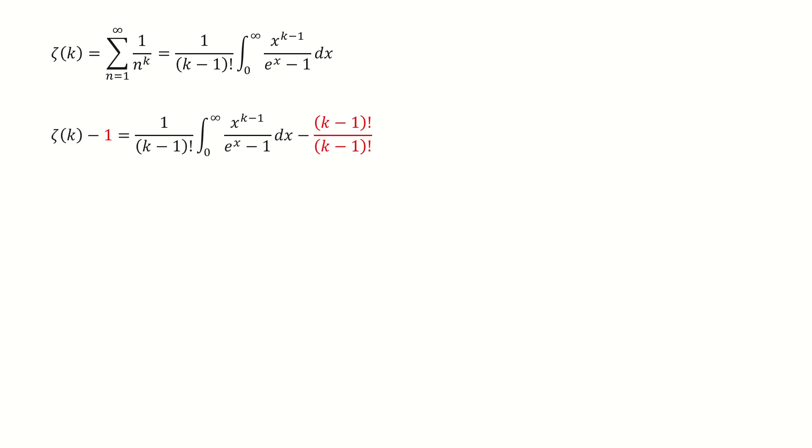Next, we subtract 1 on both sides of this equation. For the right-hand side, I write 1 as the factorial over the factorial. In this case, we can take the 1 over k-1 factorial out. And for this k-1 factorial term, this term is the gamma function, so we write it into the integral form. You can click here to see my previous video. In that video, I derived this integral equals to k-1 factorial.